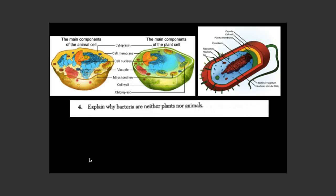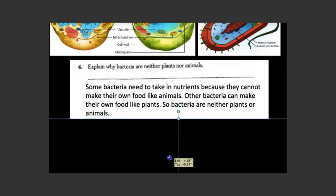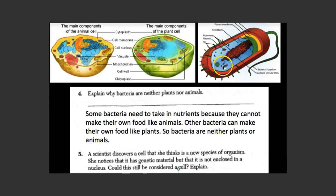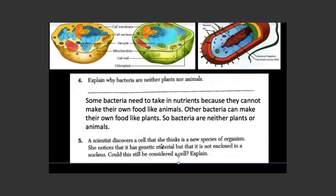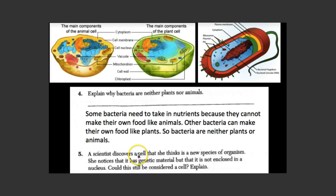Number four asks why bacteria are neither plants nor animals. In the reading it tells us that some bacteria need to take in nutrients because they cannot make their own food like animals, while other bacteria can make their own food like plants — so bacteria are neither plants nor animals. Number five: A scientist discovers a cell with genetic material but it is not enclosed in a nucleus. Could this still be considered a cell? Yes — it is bacteria because bacteria do not have a nucleus, and it is still a cell, therefore it is living.